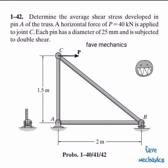This is the given problem: Determine the average shear stress developed in pin A of the truss. A horizontal force of P equals 40 kilonewtons is applied to joint C. Each pin has a diameter of 25 millimeters and is subjected to double shear.